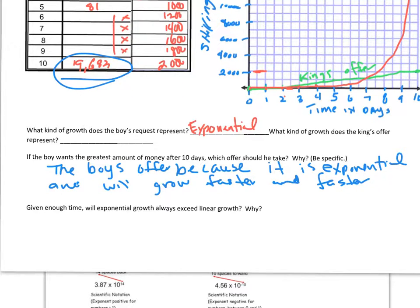Did it exceed the linear amount in our particular case? Yes, it did. Will that always be true, given enough time? You can see over here, in our example, that by day 4 or 5, it's still below the king's offer. But, by day 9 and 10, it was way above the king's offer. So the answer, as you may have guessed already, is, yes, sure, yeah, it will. Exponential growth always exceeds linear growth.